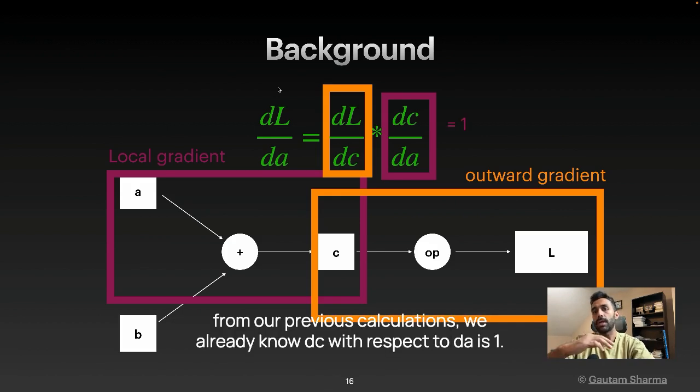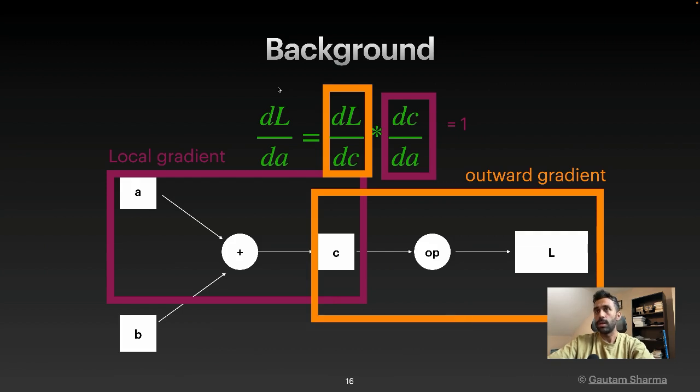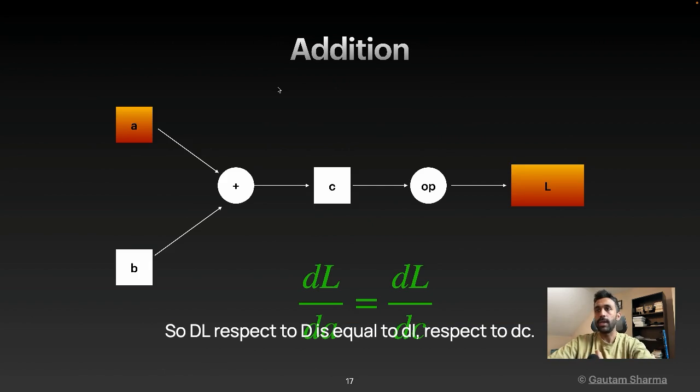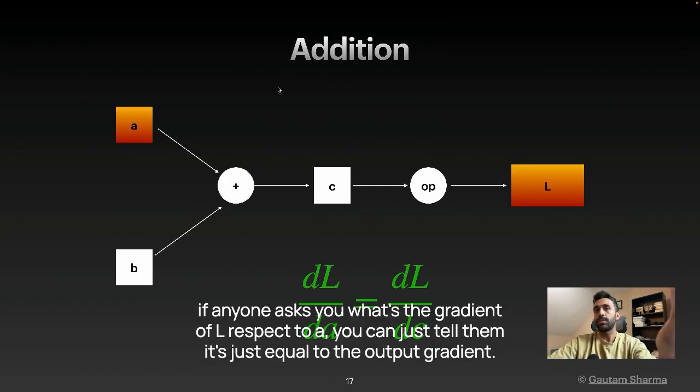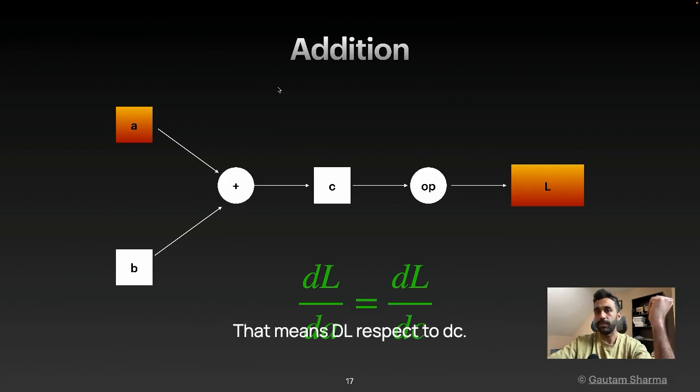From our previous calculations, we already know DC with respect to DA is 1. So DL with respect to DA is equal to DL with respect to DC. If anyone asks you what's the gradient of L with respect to A, you can just tell them it's just equal to the output gradient. That means DL with respect to DC.